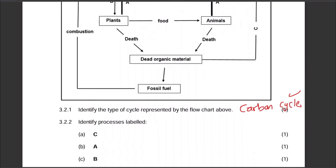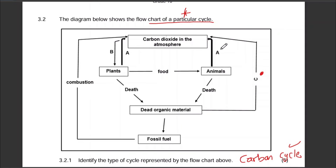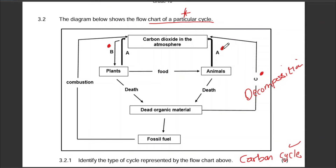Next, identify the processes labeled C, A, and B. For C: the dead organic matter process will release carbon dioxide into the atmosphere — that is decomposition. For A: animals release carbon dioxide into the atmosphere — the main process that takes place here is cellular respiration.